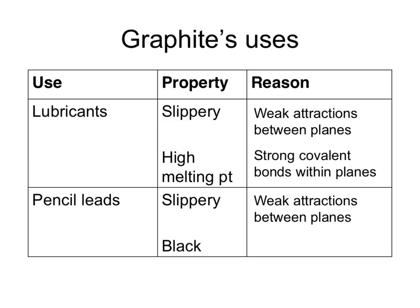Graphite is used in lubricants because it's slippery — due to weak attractions between the planes. It's also used as a lubricant in machinery because it has a high melting point, caused by the strong covalent bonds within the planes. It's used in pencil leads because it's slippery and black, and therefore will mark the paper.